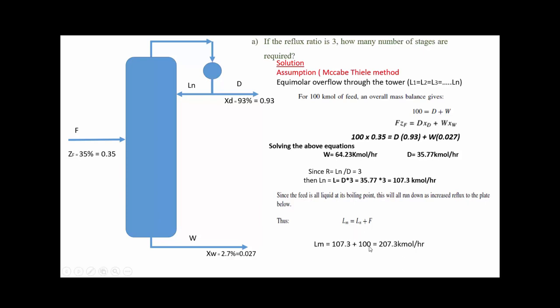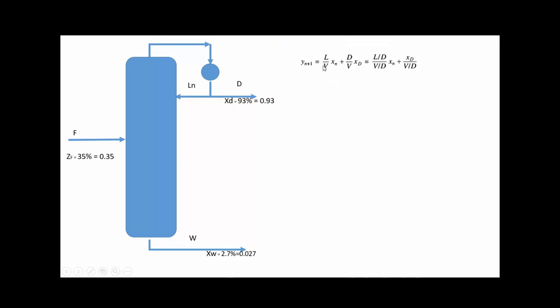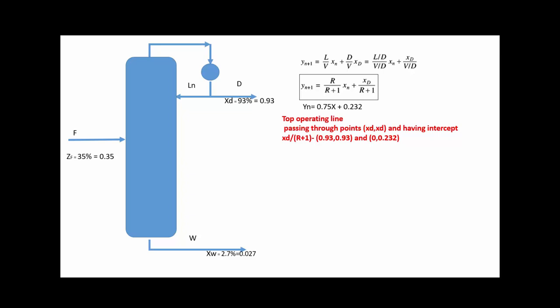For the top operating line, the general equation derived previously simplifies to: Y = (R/(R+1))·X + XD/(R+1). Substituting R = 3 and XD = 0.93, we get Y = 0.75X + 0.232. This top operating line passes through the point (XD, XD) = (0.93, 0.93) and has a y-intercept of XD/(R+1) = 0.232.